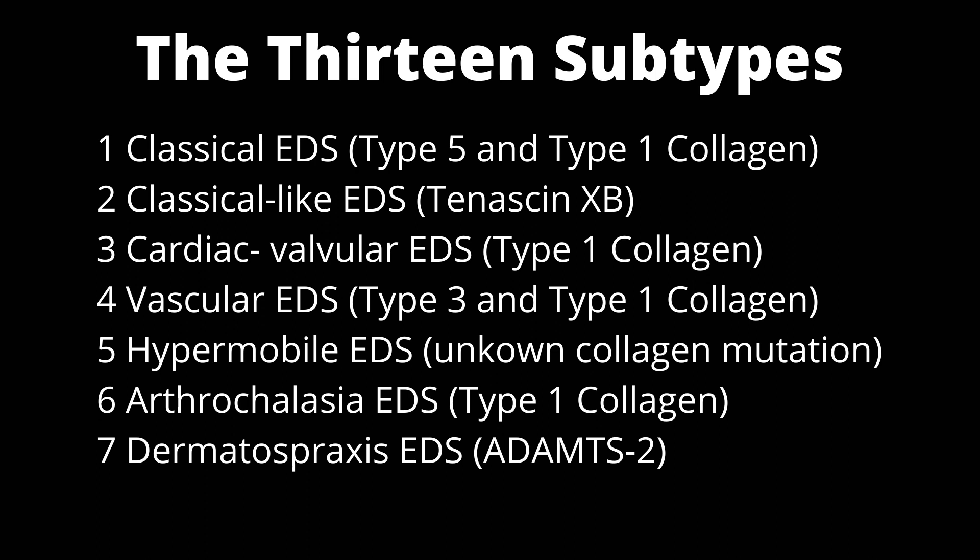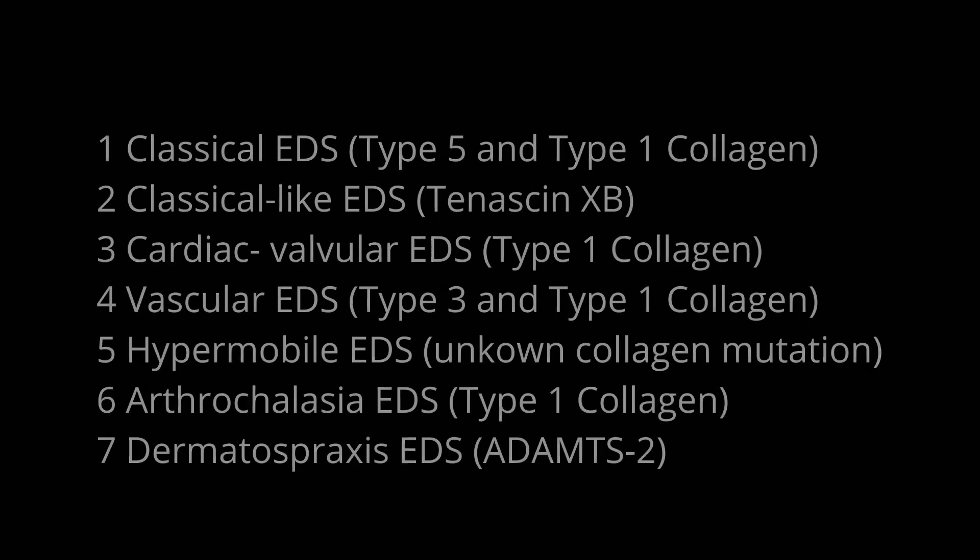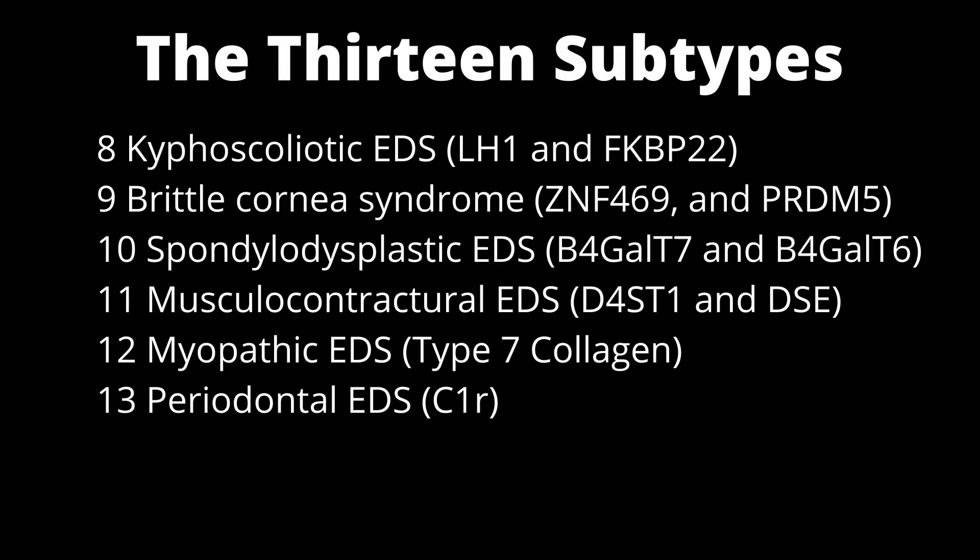Vascular EDS involves type 3 and type 1 collagen. Hypermobile EDS involves an unknown collagen mutation. Arthrocalasia EDS involves type 1 collagen. Dermatosporaxis EDS involves an ADAMTS2 mutation. Kyphoscoliotic EDS affects LH1 and FKBP2P2 genes.